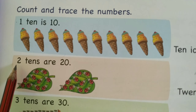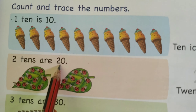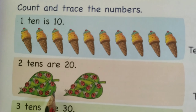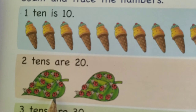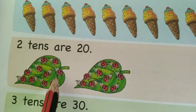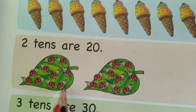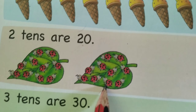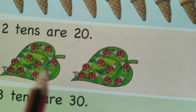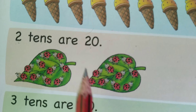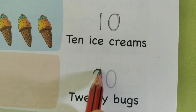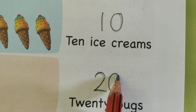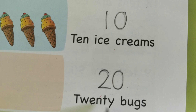Next is: two tens are twenty. You see here two leaves. In one leaf you will see ladybirds — the bugs. How many bugs in one leaf? Ten. The other leaf? Ten. So that means two tens, which is twenty. So it is written: twenty bugs.